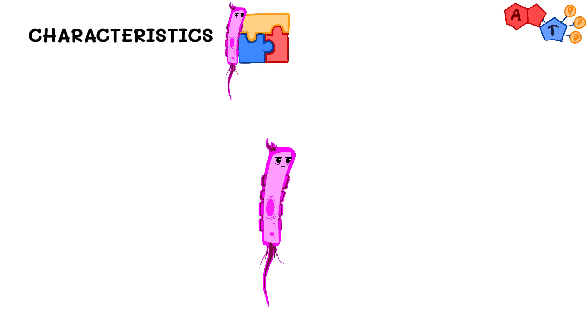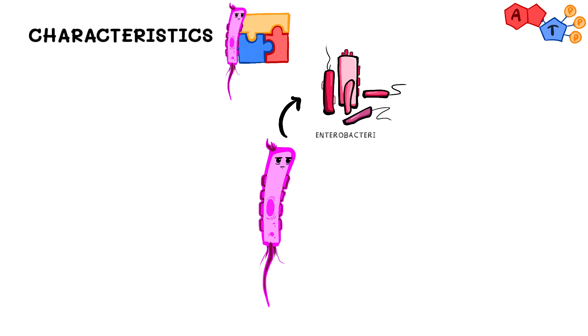To start with, Proteus belongs to a big family of bacteria known as Enterobacteriaceae, which are gram-negative rods that live in the intestines. Now let's talk about the features of Proteus mirabilis. This organism is a facultative anaerobic bacillus which means it can grow in both the presence or the absence of oxygen.